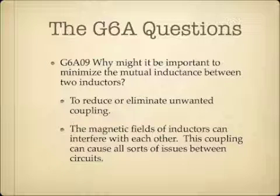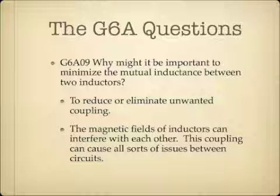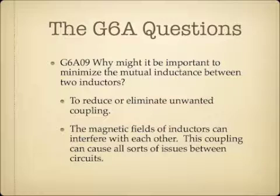Why might it be important to minimize mutual inductance between two inductors? The answer is to reduce or eliminate unwanted coupling. The magnetic fields of inductors can interfere with each other, and this coupling can cause all sorts of issues between circuits unless you want it to happen. So you want to minimize that to reduce or eliminate unwanted coupling.